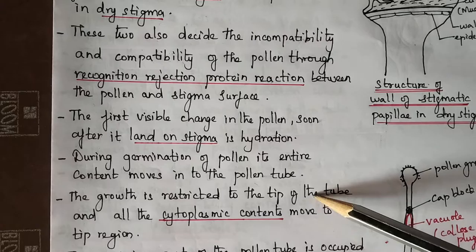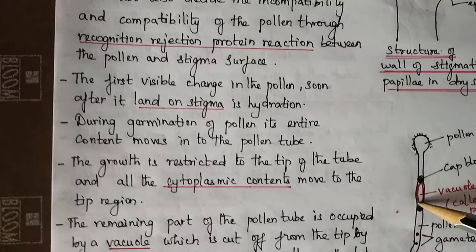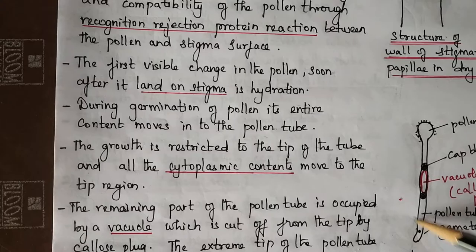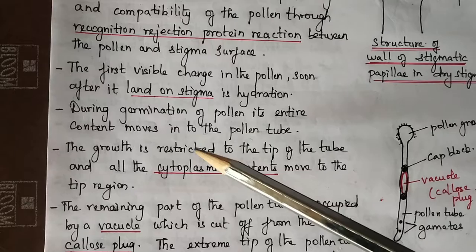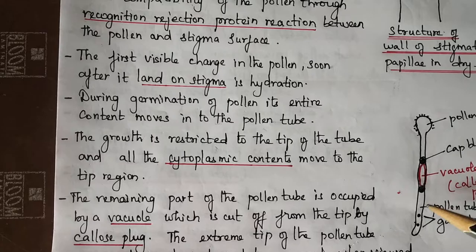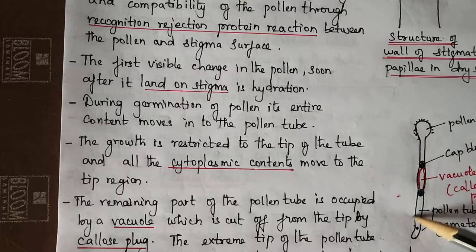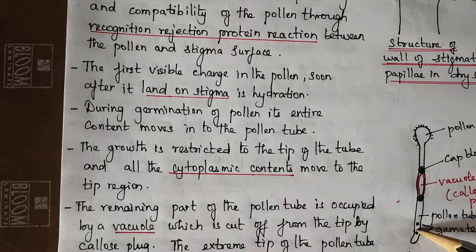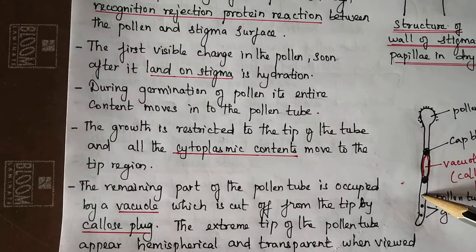During germination of pollen, its entire content moves into the pollen tube. The growth is restricted to the tip of the tube, and all the cytoplasmic contents move through the tube region. The remaining part of the pollen tube is occupied by a vacuole.